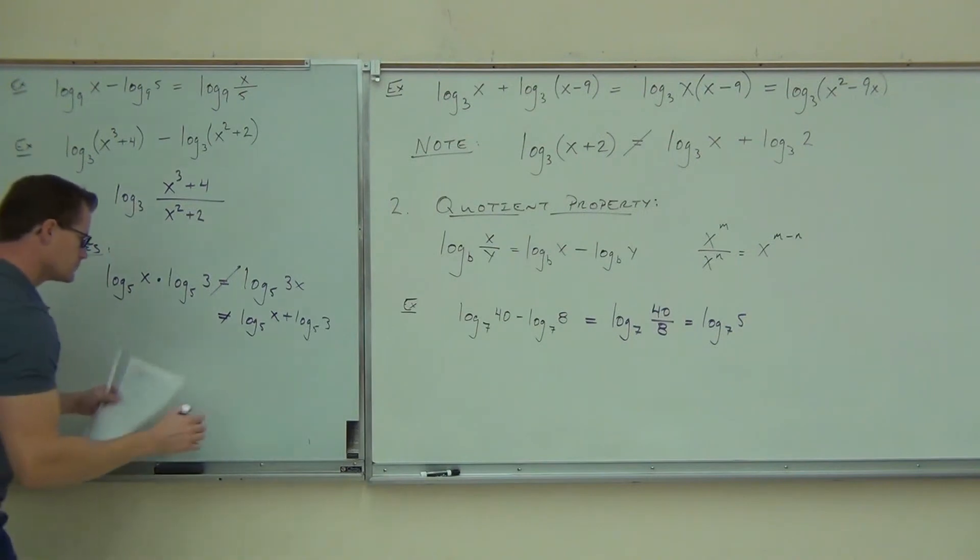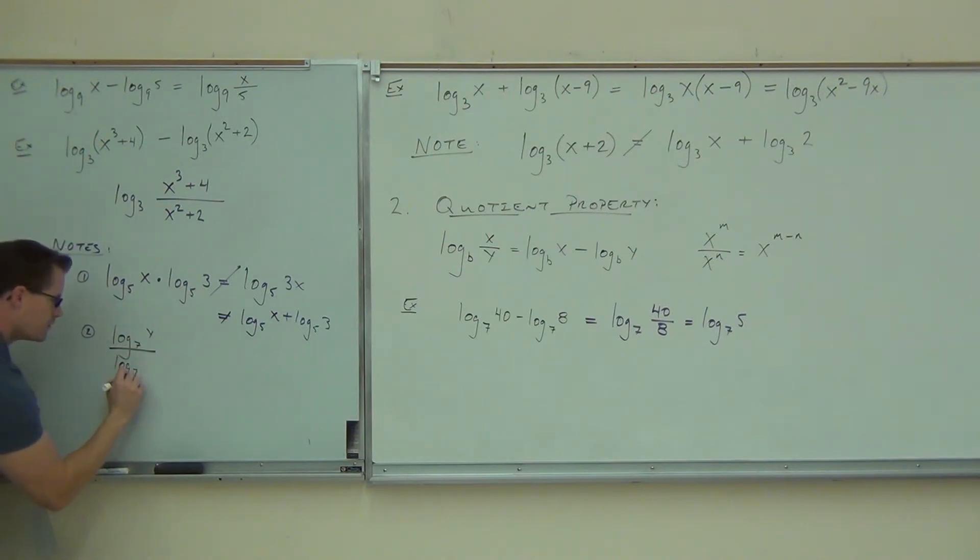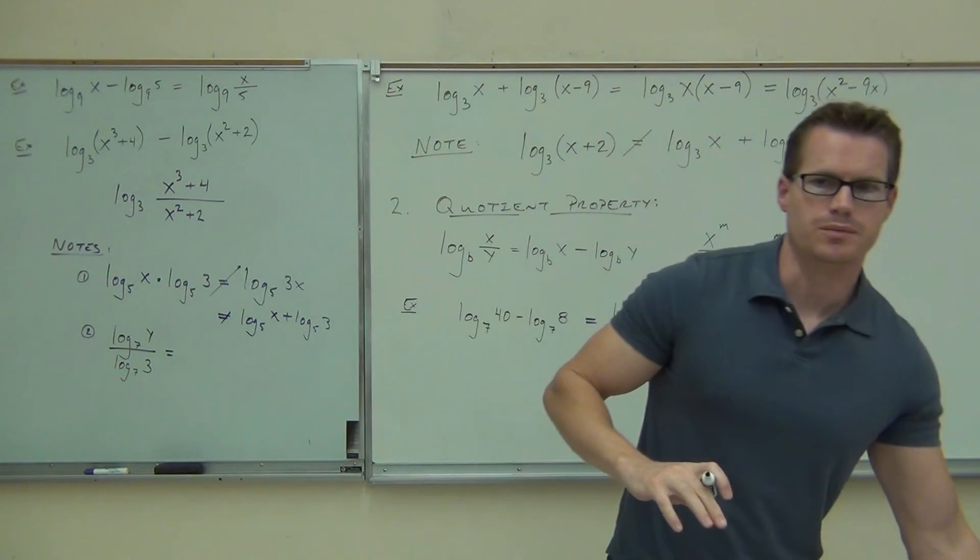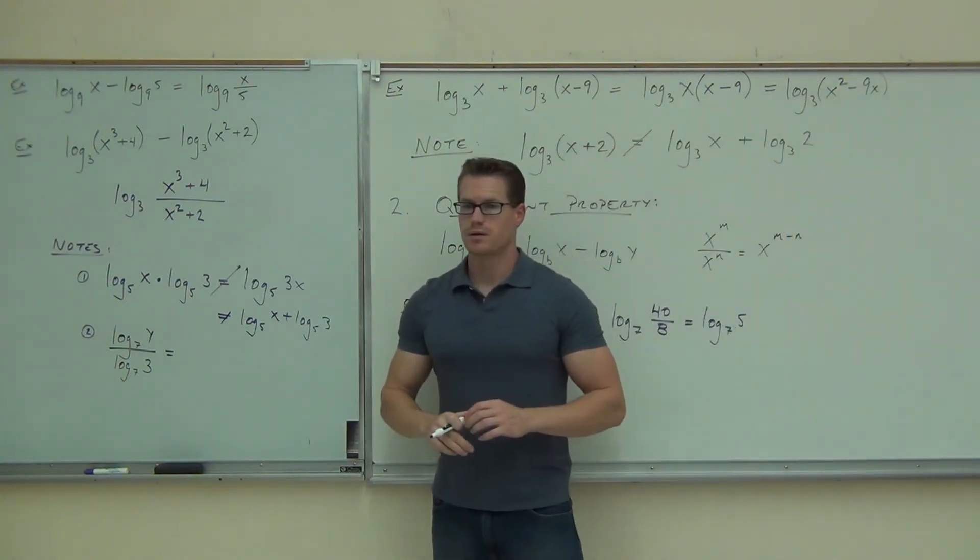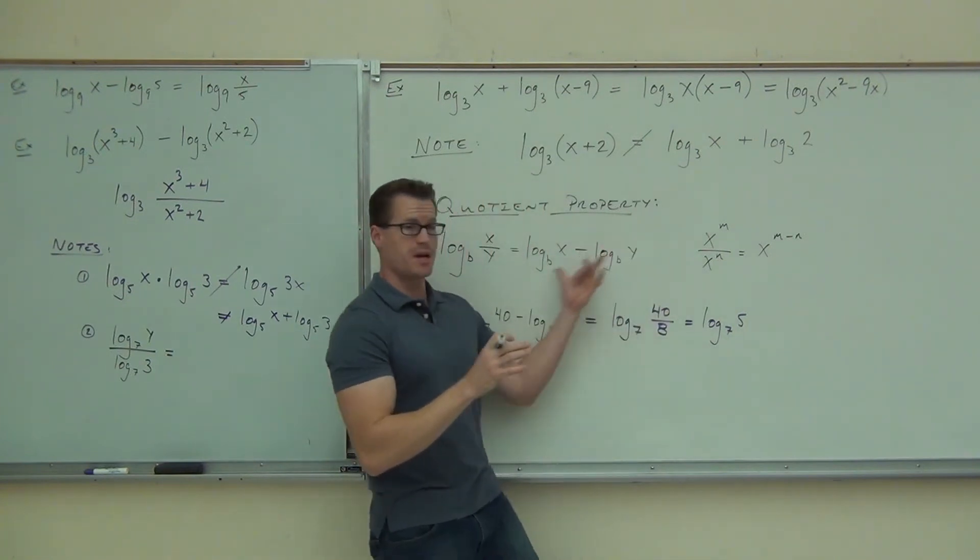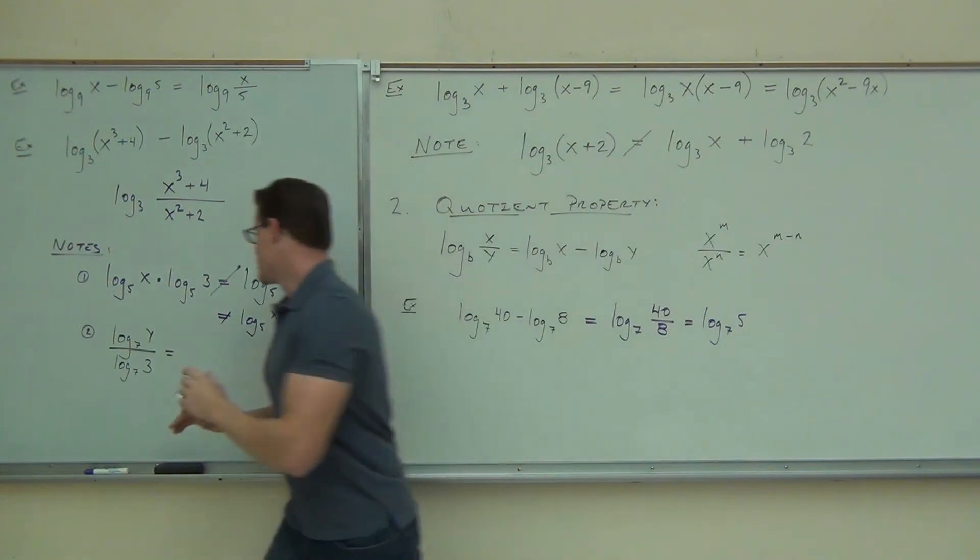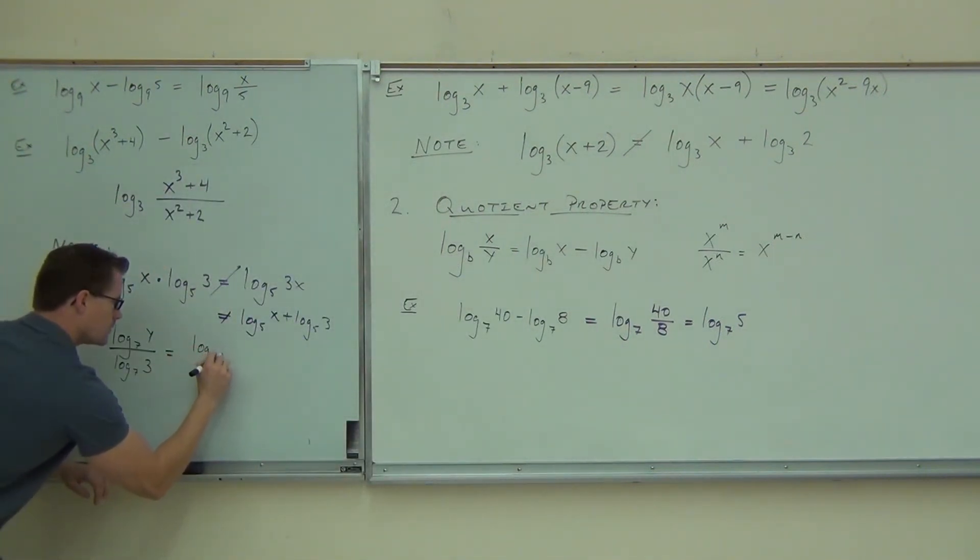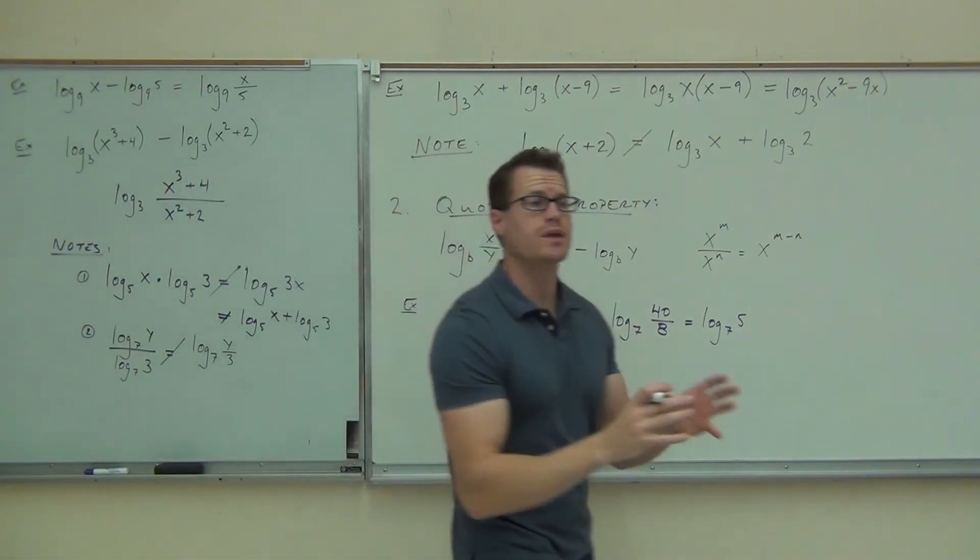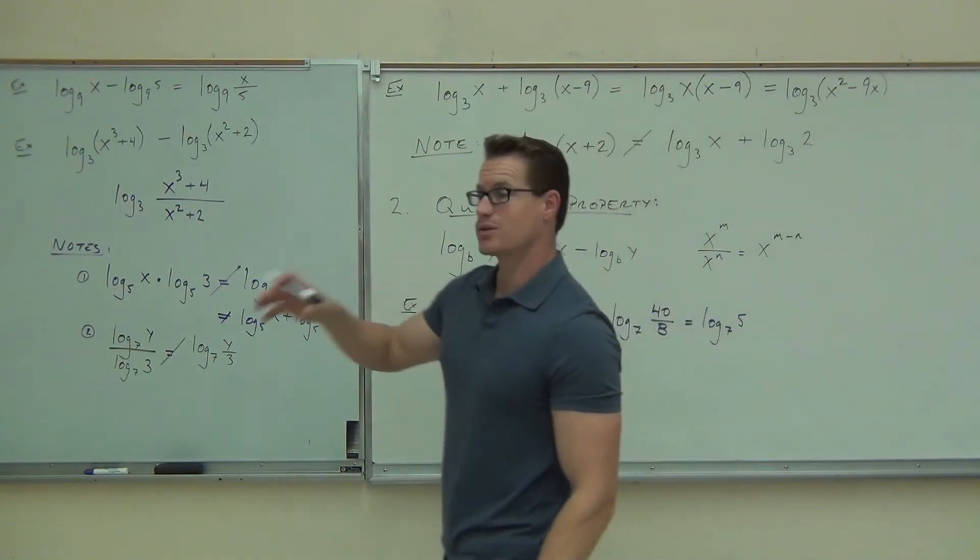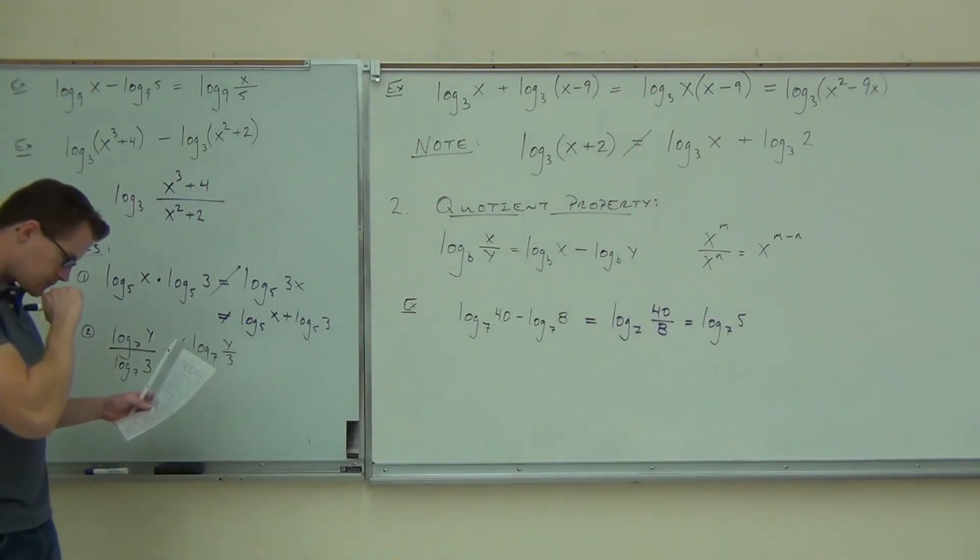A couple other ones. I showed this to you over here, but I want to make sure you really see it. If you ever have a logarithm over a logarithm like that, can you combine those two logarithms? What do you think? Does it look exactly like the property that's on the paper? Does it look exactly like this? No, then you can't combine them. This in no way equals this. You can't do that. They literally have to look identical to the properties I just gave you. Otherwise, you can't work with them.